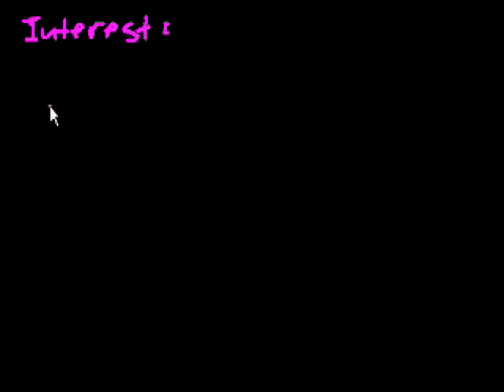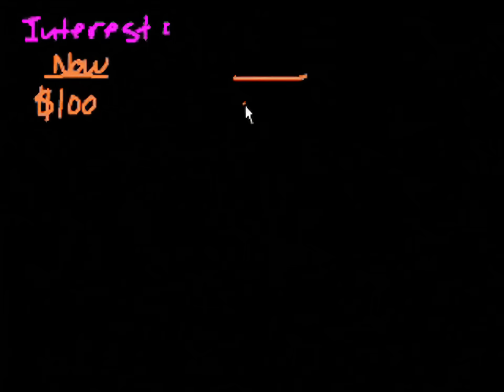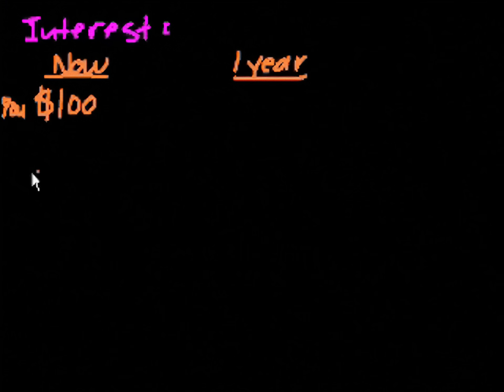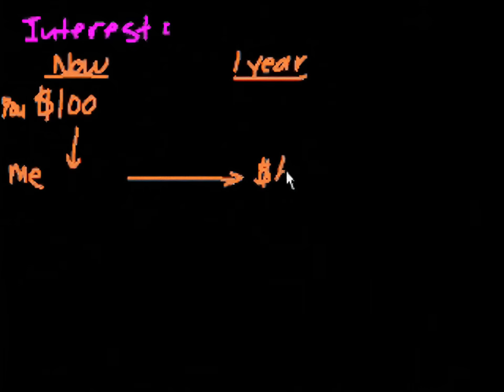Let's say that I want to borrow $100 from you. So this is now, and let's say that this is one year from now. This is you, and this is me. So now you give me $100, and then I have the $100, and a year goes by. And if I were to just give you that $100 back, you would have collected no rent, no interest.